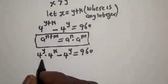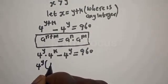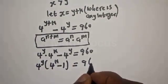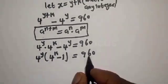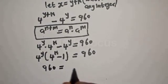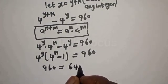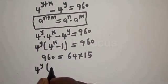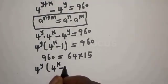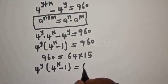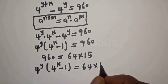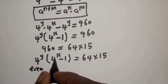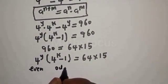Factoring out 4 raised to power y, we get: 4 raised to power y times (4 raised to power k minus 1) equals 960. Now, 960 equals 64 multiplied by 15. So 4 raised to power y times (4 raised to power k minus 1) equals 64 multiplied by 15. From here we can identify equation 1: 4 raised to power y equals 64, and equation 2: 4 raised to power k minus 1 equals 15.